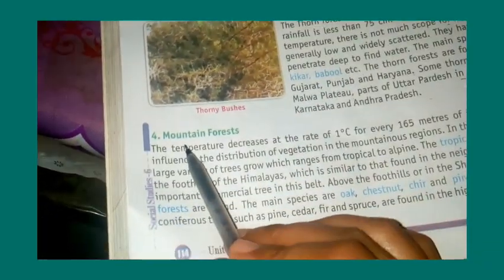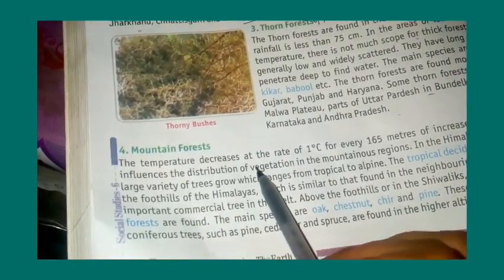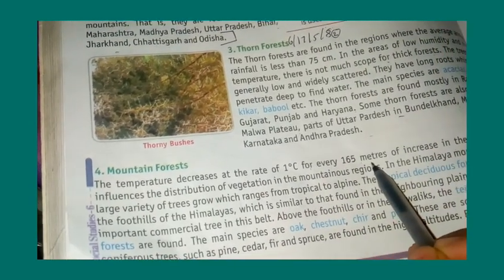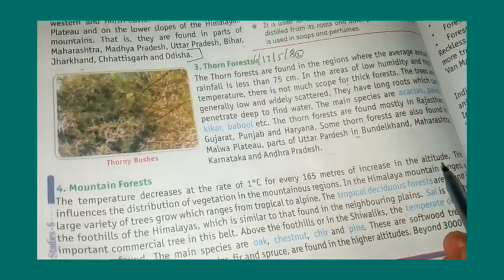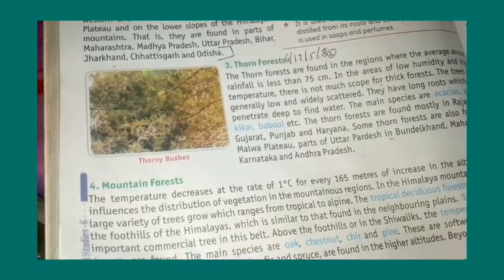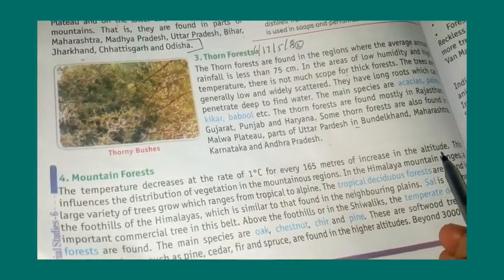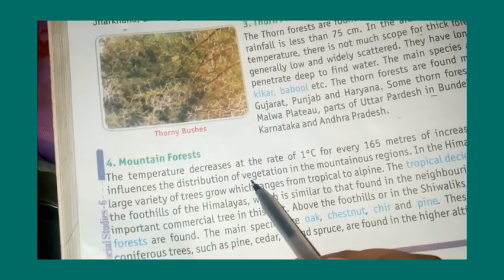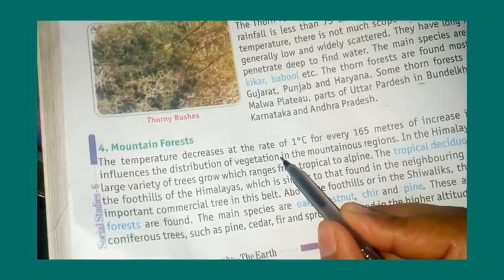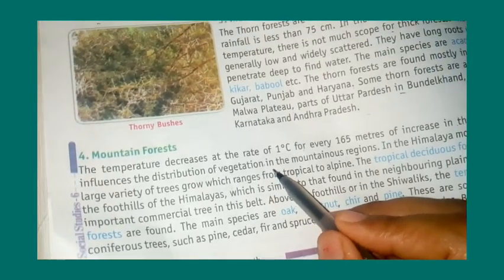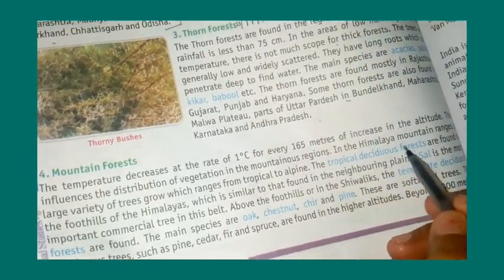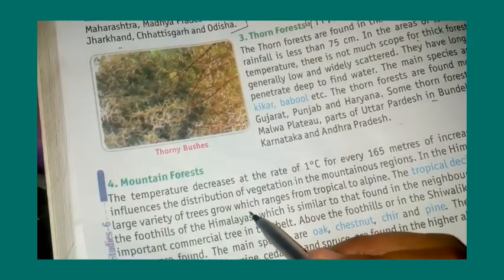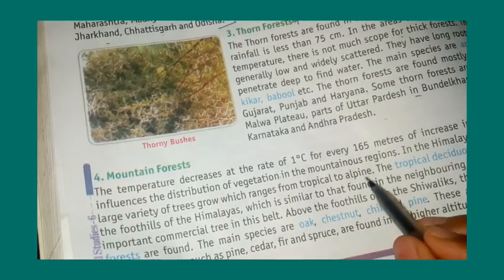In mountain forests, the temperature decreases at the rate of one degree centigrade for every 165 meters of increase in altitude. This influences the distribution of vegetation. In the Himalayan mountain ranges, a large variety of trees grow, ranging from tropical to alpine.